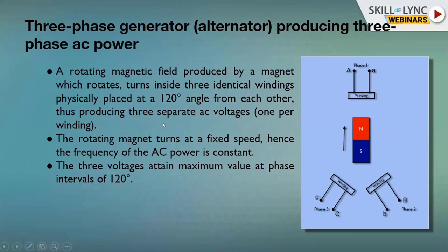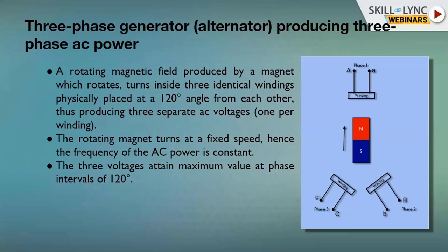A rotating magnetic field is produced by a magnet that rotates inside three identical windings physically displaced at 120 degrees from each other, producing three separate AC voltages — one in each winding. The R phase develops one voltage; the Y phase develops a voltage lagging by 120 degrees; the B phase develops a voltage lagging by 240 degrees. The generators used at generating stations are called synchronous generators, rotating at a fixed speed.